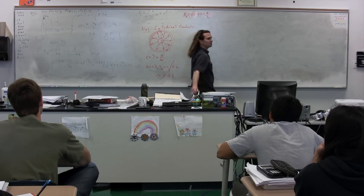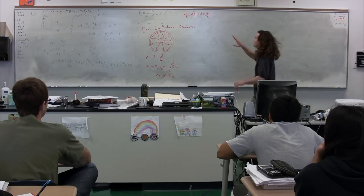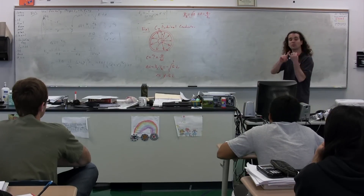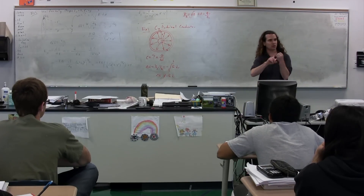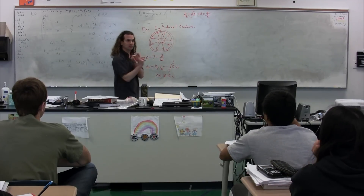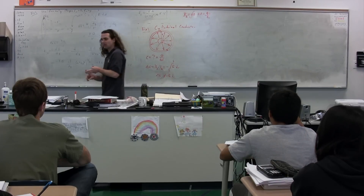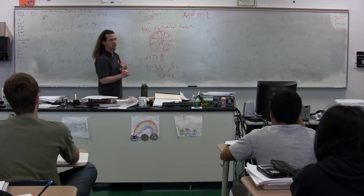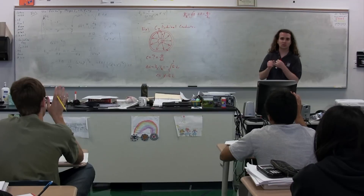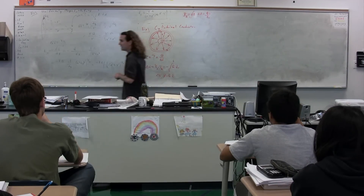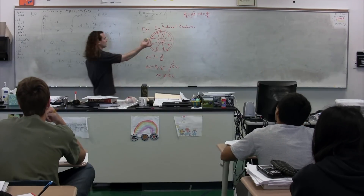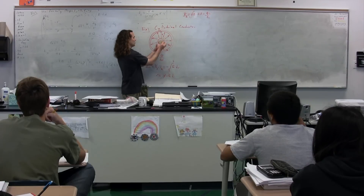We pick the shape so that it works out on the left-hand side. Theta equals zero or 90 degrees. We need to pick a shape where the angle between the area vector and the electric field is either 90 degrees or zero, and where the electric field is constant on that surface. It's going to be a cylinder. We're going to pick a Gaussian surface which is a cylinder with radius r, oriented like that.